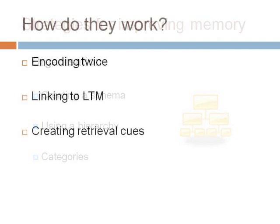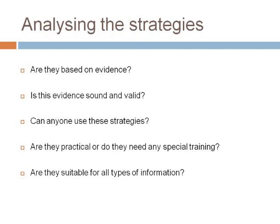You will need to be able to identify how each strategy might work. Some strategies work by encoding the information twice — visual mnemonics, for example, might involve both visual and acoustic encoding, which should strengthen the memory trace and increase the likelihood that it will be recalled. Some strategies are based on linking information to items already in your long-term memory. Some strategies work by creating retrieval cues — make sure you spell 'cue' correctly as it's different to forming a queue. You will also need to be able to analyse the strategies by considering: are they based on evidence? Is this evidence sound and valid? Can anyone use these strategies? Are they practical or do they need special training? And finally, are they suitable for all types of information?